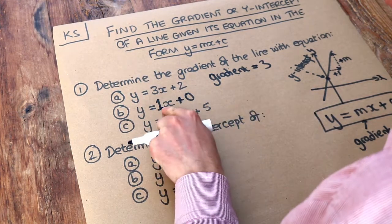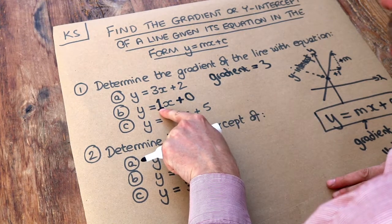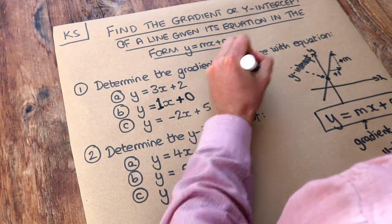Because 1x plus 0 is the same as 1x, which is the same as x. So we can see here the gradient is 1. So the gradient here is 1, the number in front of x.